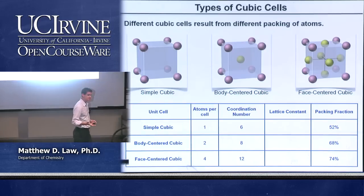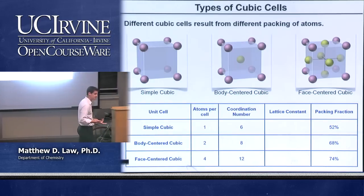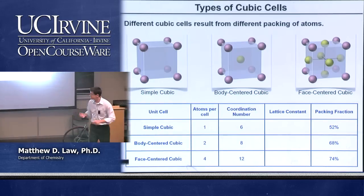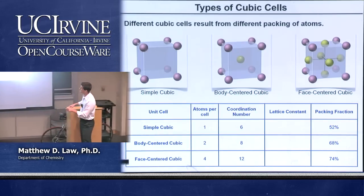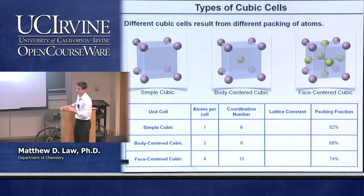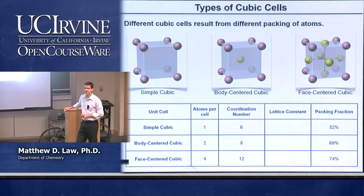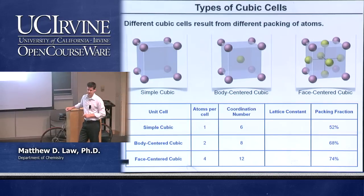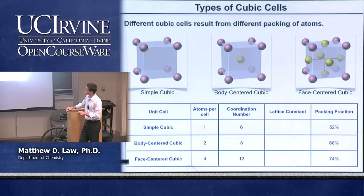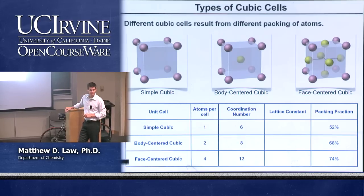In body-centered cubic, the easiest position to see is the body-centered position, which clearly has 8 nearest neighbors. The 8 nearest neighbors are inscribed at the corners of a cube, so that's a coordination number of 8.